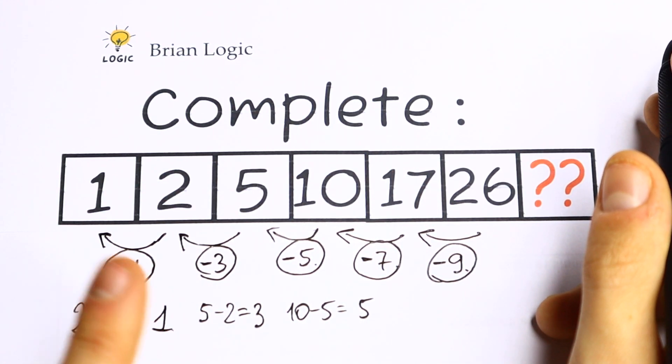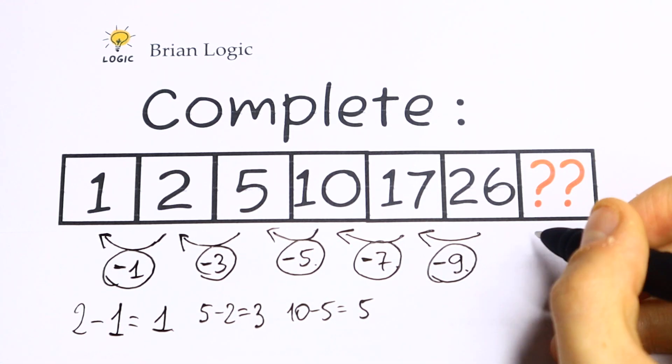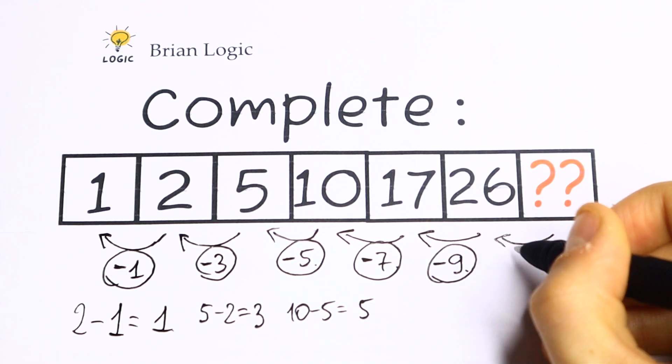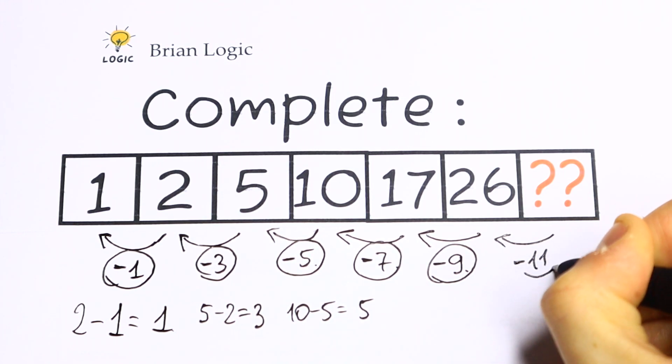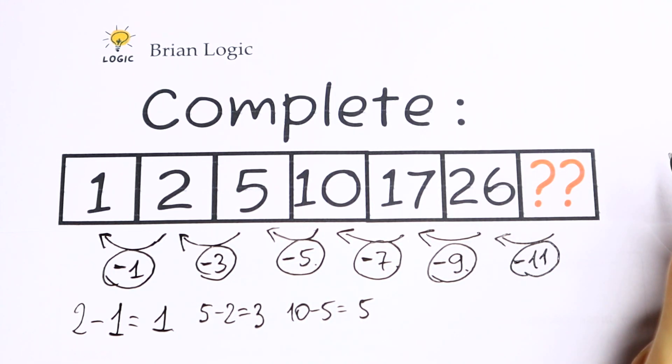So 1, 3, 5, 7, 9. We would have even numbers if we had 2, 4, 6, 8. But in our case we have 1, 3, 5, 7, 9. So it's not hard to see that we need to subtract 11 from the last number to have this 26.